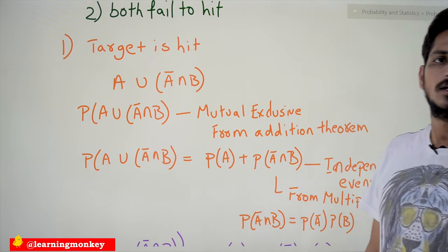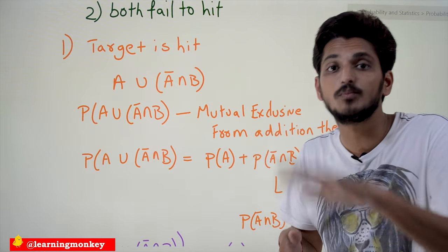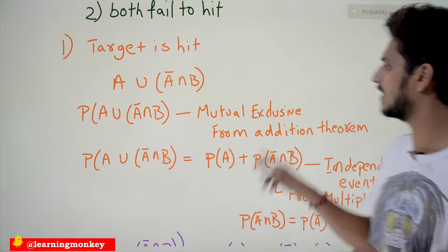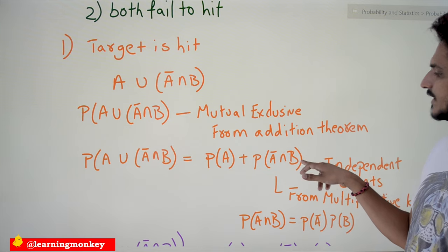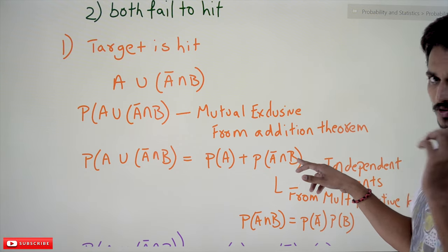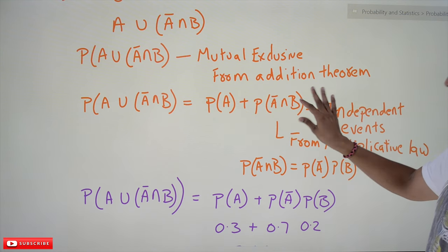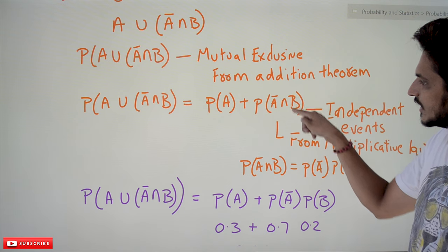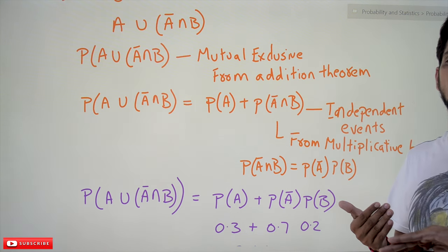These two possibilities are mutually exclusive events — both occurring at the same time is not possible. From the addition law of probability, P(A ∪ (A' ∩ B)) = P(A) + P(A' ∩ B). Also, these are independent events — the first event does not affect the probability of the second. That is the difference between mutually exclusive and independent events.